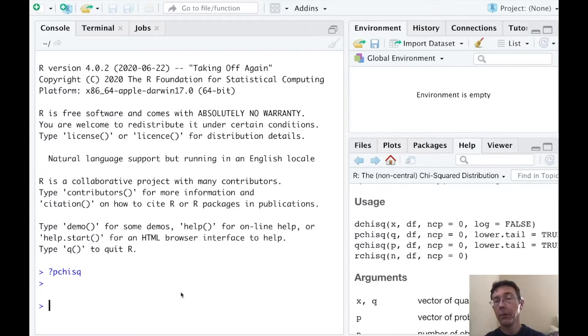So the first problem that we need to solve is to find the probability of randomly getting an x value between 12 and 18 in the chi-squared distribution with 15 degrees of freedom. So this is a pchisq problem. P, C, H, I, S, Q.